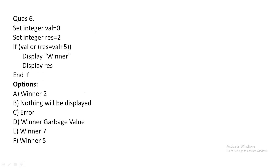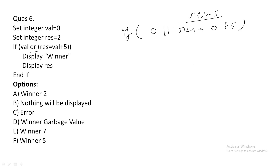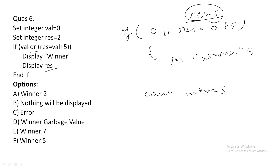Next question: set integer value = 0, set integer result = 2. If(value AND result): since this is AND, we check further — result = value + 5, so 0 + 5 = 5. Five is non-zero, so the if condition is true and control enters the if block, displaying 'winner'. Since there is no newline, then display result — value of result is 5. Final output: 'winner5'.